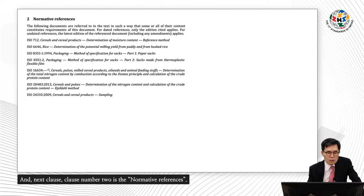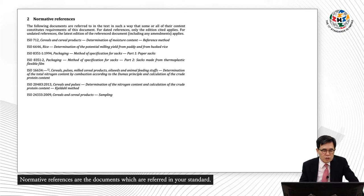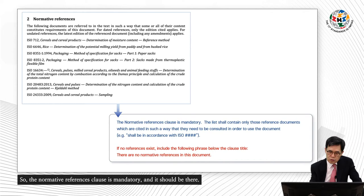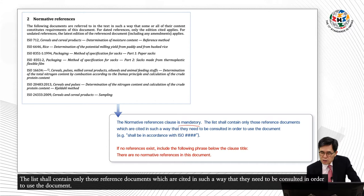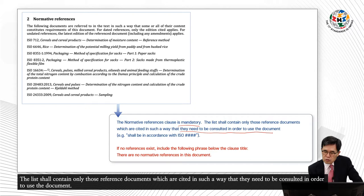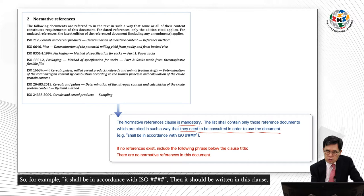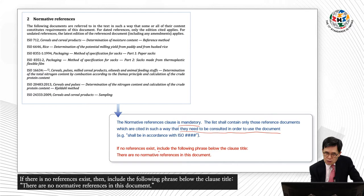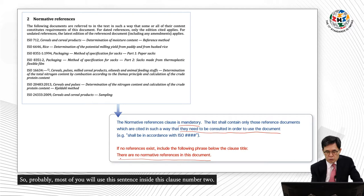Clause number two is the normative references. Normative references are the documents which are referred to in your standard. The normative reference clause is mandatory. The list shall contain only those reference documents which are cited in such a way that they need to be consulted in order to use the document. For example, 'it shall be in accordance with ISO number' — then it shall be written in this clause. If no reference exists, include the phrase: 'There are no normative references in this document.' Probably most of you will be using this sentence.